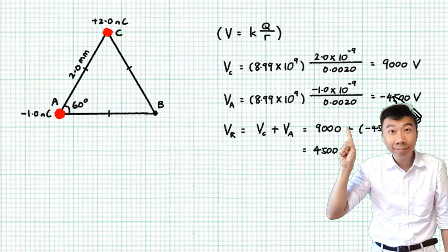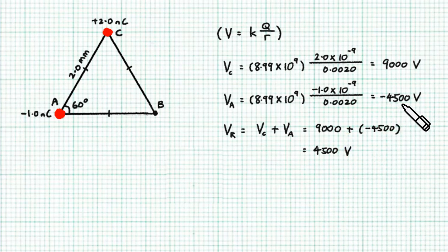That's why when using the formula KQ over R, it's very useful to include the sign of the charge. See, I include the sign of the charge. So the outcome of the calculation will describe fully the electric potential, and I just need to sum up the numbers to give me the resultant potential.